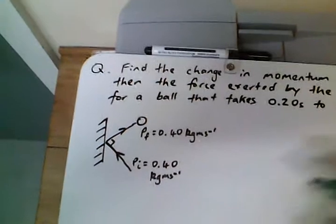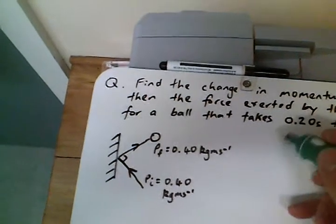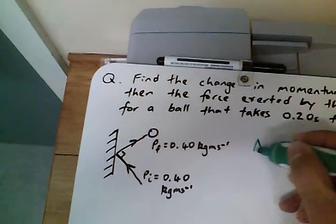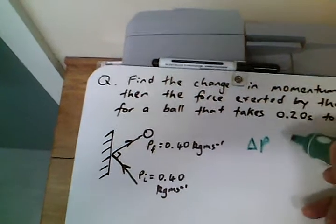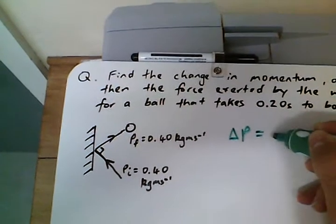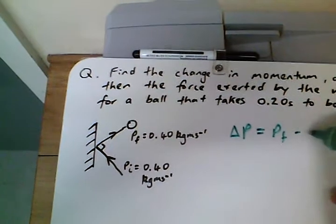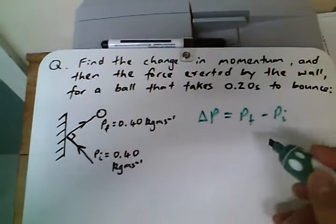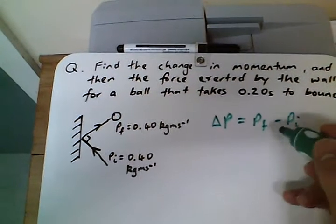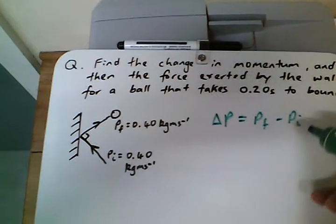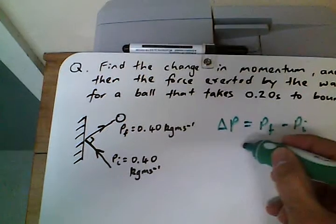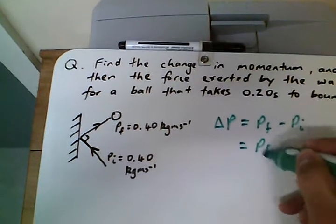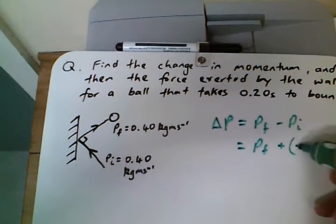This is obviously a vector problem so we need to find the change in momentum, delta P equals Pf minus Pi. Since we can't take a vector away, we have to add the negative, so that's going to be the same as the final plus the negative of the initial.